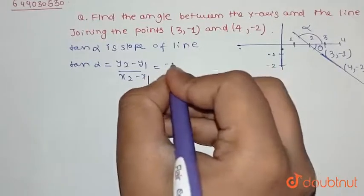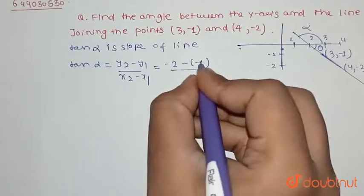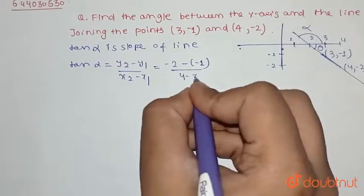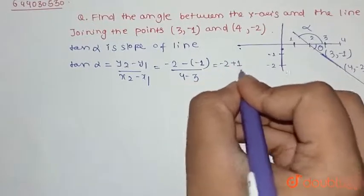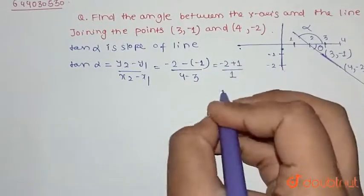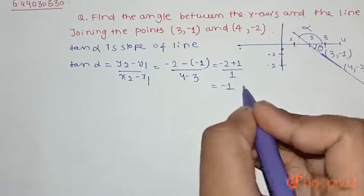This equals -2 minus (-1) upon 4 minus 3. That is -2 plus 1 upon 1, which equals -1.